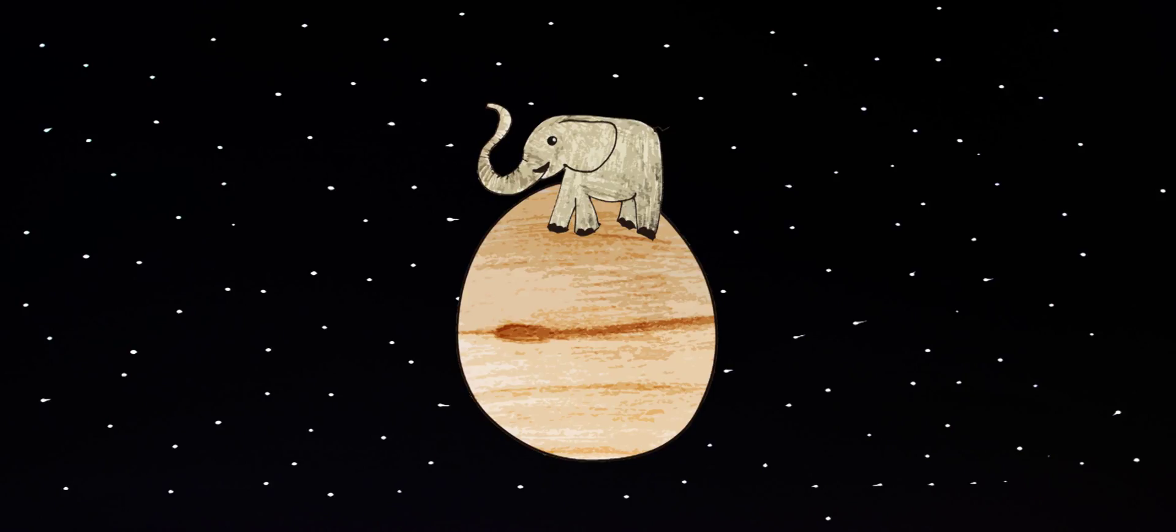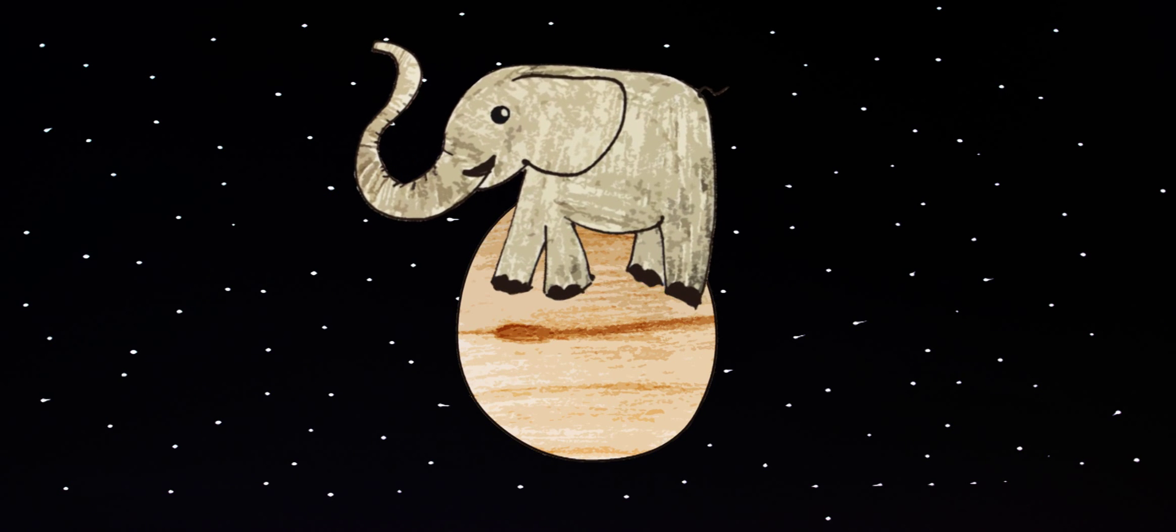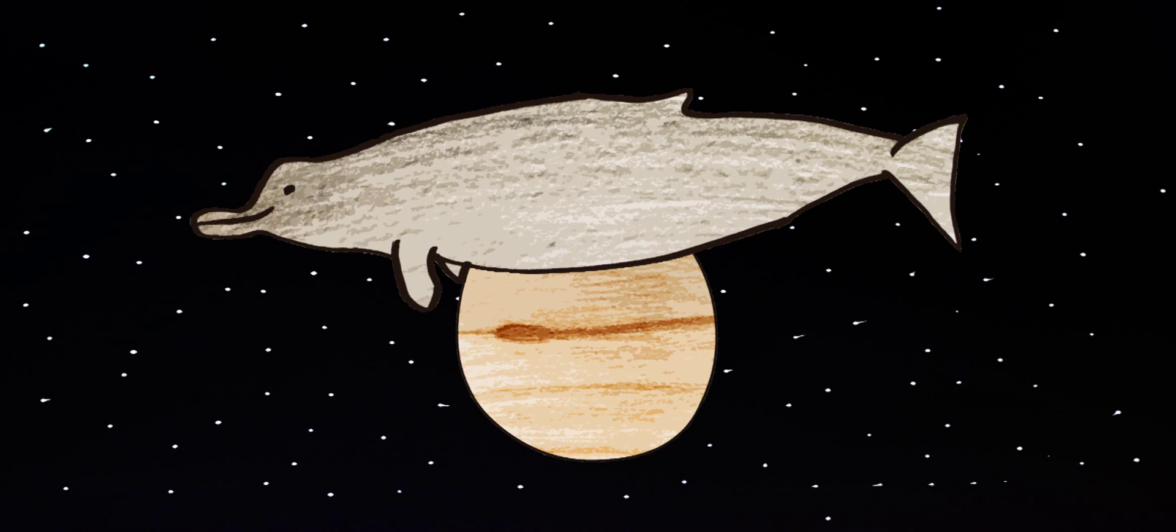On Jupiter, our most massive planet in the solar system, the elephant's weight would increase 2.5 folds to weigh something in the range of a North Pacific bear's beaked whale.